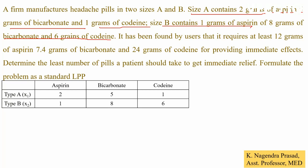Type A consists of aspirin 2 grams, bicarbonate 5 grams, and codium 1 gram. Similarly, type B consists of 1 gram of aspirin, 8 grams of bicarbonate and 6 grams of codium. Next we have to see what constraints there are. We observe the next sentence: it has been found by users that it requires at least — the word 'at least' indicates a constraint. So, at least 12 grams of aspirin gives us the constraint for aspirin as 12 grams.